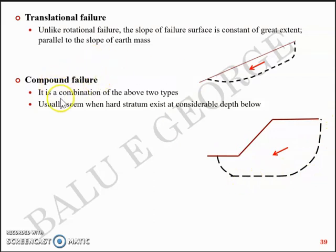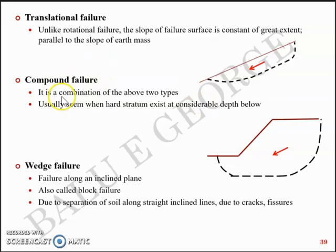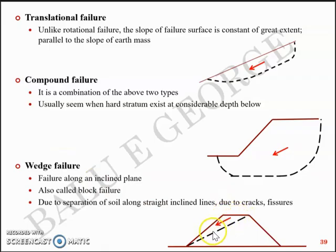The next one is a wedge failure. As the name suggests, the failure is along an inclined plane and like a block. It moves or it has a tendency to move like a block. And it's also called as a block failure. And it's due to the separation of soil along a straight line inclined to the surface, usually due to the presence of cracks or fissures.